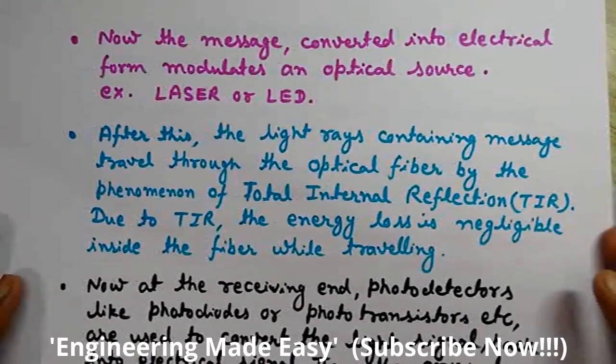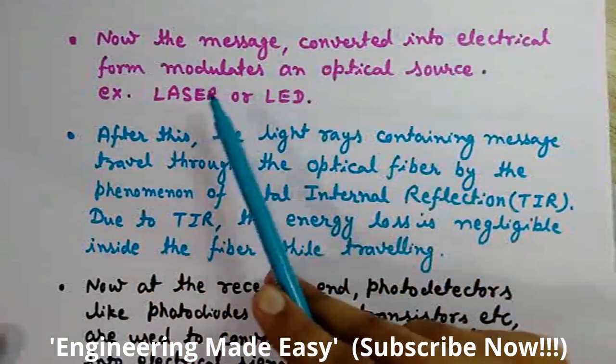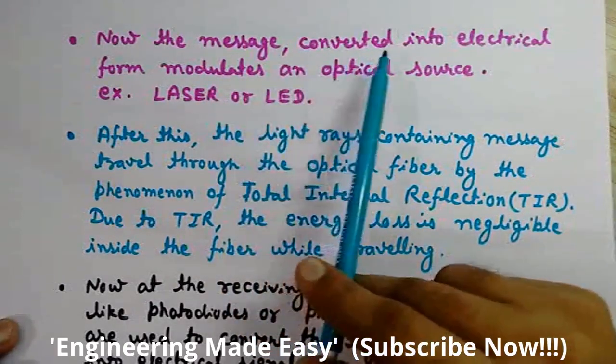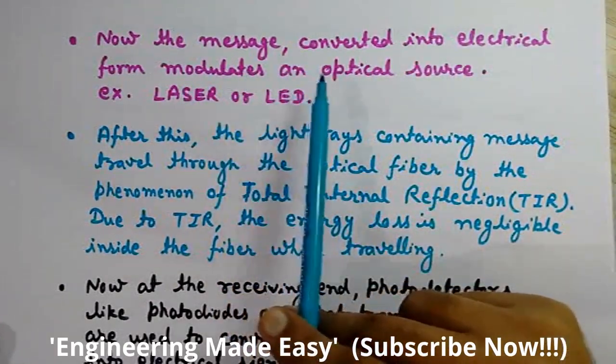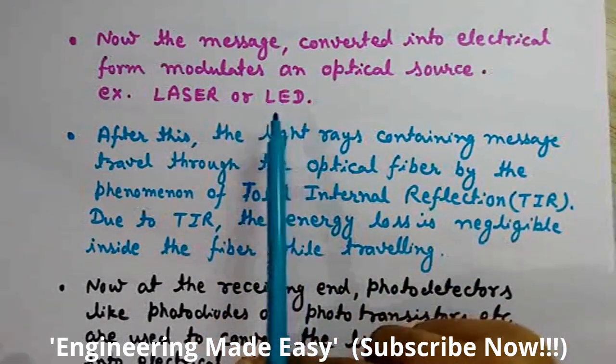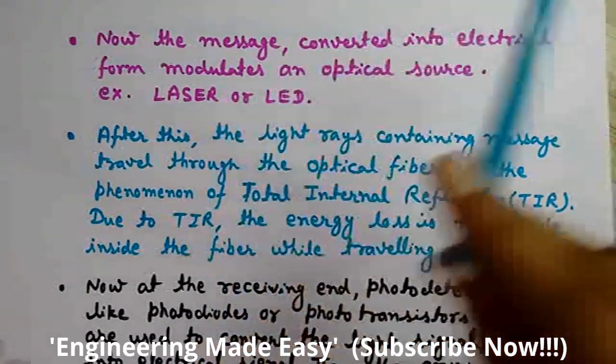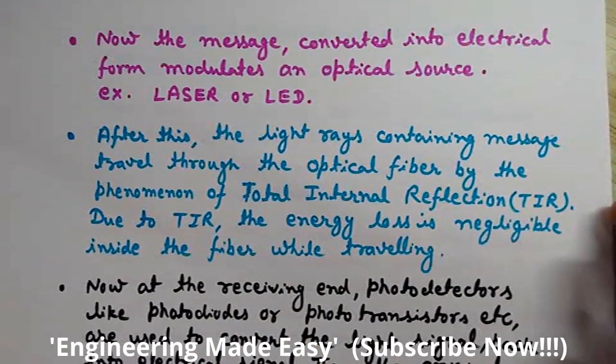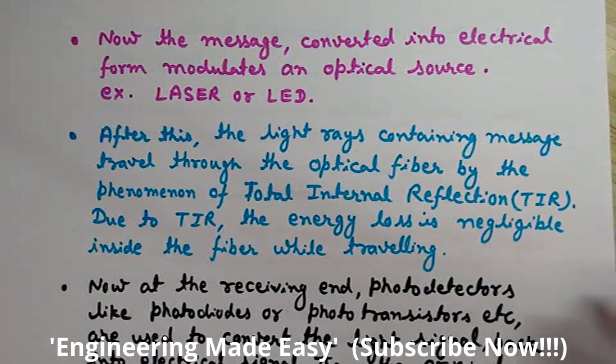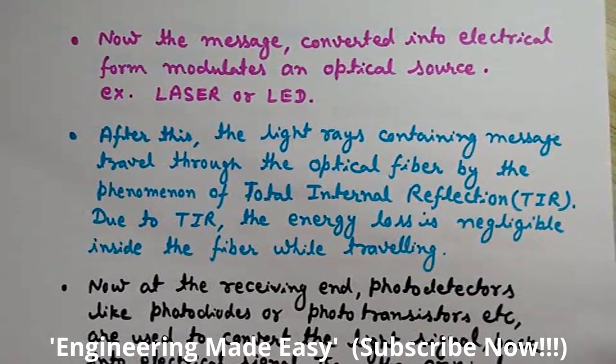When it has been converted using transducers into electrical signal, now the message which is converted into electrical form modulates an optical source. Optical source means we can take lasers or LEDs - light emitting diodes. So we use in optical fibers mainly lasers or LEDs as the optical source. We modulate this message over the light that comes from the optical sources, so we have a modulated light signal having the message.